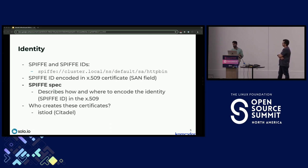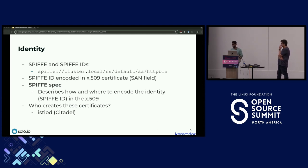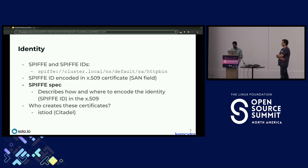A service can have a certificate, but if that certificate was issued through some malicious or unconventional means, we haven't attested the workload and can't truly verify if it's legitimate. Within Istio, identity comes in the form of a SPIFFE ID document that gets encoded in an X.509 certificate signed by a trusted authority.